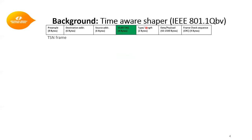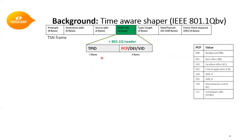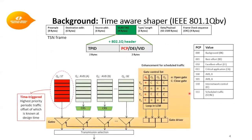One enhancement made by TSN to the conventional Ethernet frame is an extra 4 bytes of data added to the frame header. This extra 4 bytes holds a 3-bit priority code point, or PCP value. The PCP value specifies the priority of the data being transmitted in the frame, and we use this PCP value to forward data through dedicated queues at each egress port of a TSN switch.